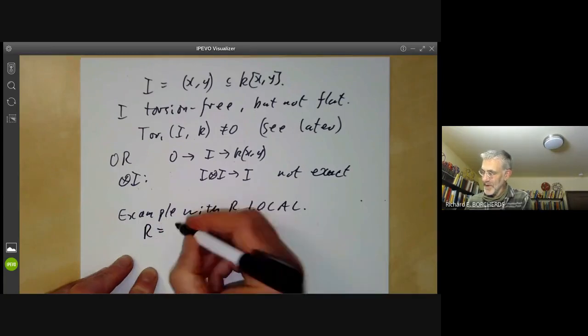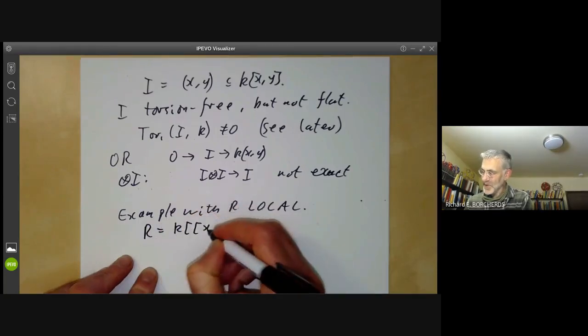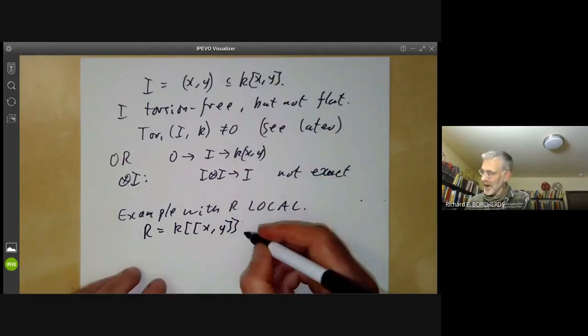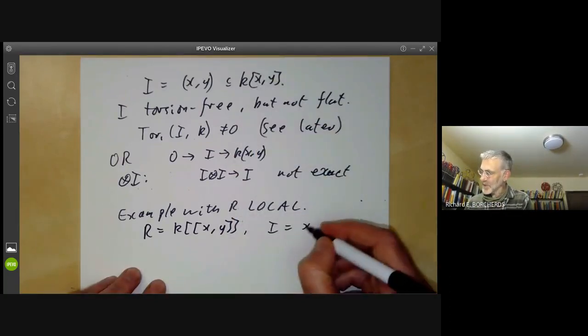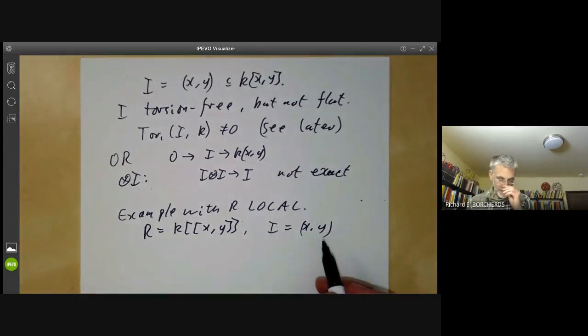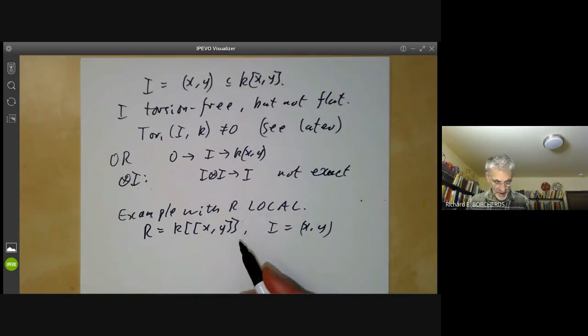Here we just do almost exactly the same as before. We just take R to be the ring of formal power series over a field instead of the polynomial ring. And again, we take I to be (X,Y). Then the ideal is torsion-free but not flat. So torsion-free doesn't behave all that nicely, even for local rings.